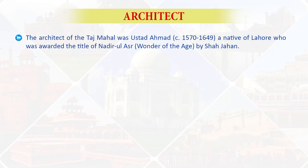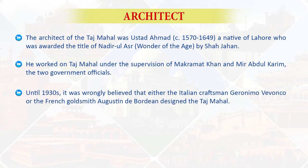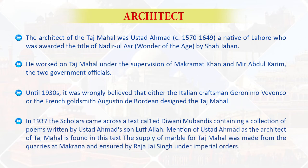If we talk about the architect and the architecture of the Taj Mahal — it was built by Ustad Ahmad. He was the main architect of Taj Mahal, a native of Lahore who was awarded the title of Nadir-ul-Asr, i.e., Wonder of the Age, by Shah Jahan. He worked on Taj Mahal under the supervision of Makramat Khan and Mir Abdul Karim, two government officials. Until 1930, it was wrongly believed that either the Italian craftsman Geronimo Veroneo or the French goldsmith Augustine de Bordeaux designed the Taj Mahal. In 1937, scholars came across a text called Diwan-i-Muhandis containing poems by Ustad's son Lutfullah, in which mention of Ustad Ahmad as the architect of Taj Mahal is found. The supply of marble was made from the quarries at Makrana and ensured by Raja Jai Singh under imperial orders.